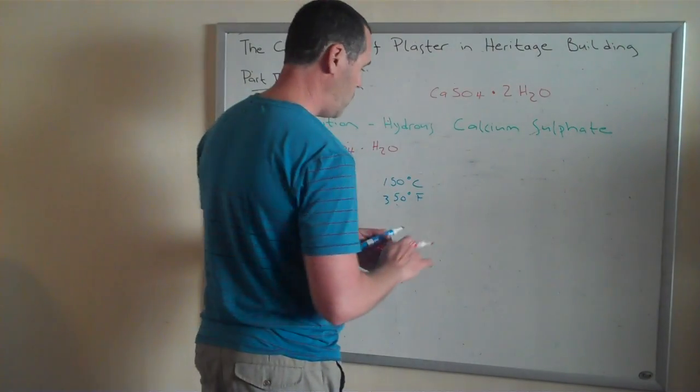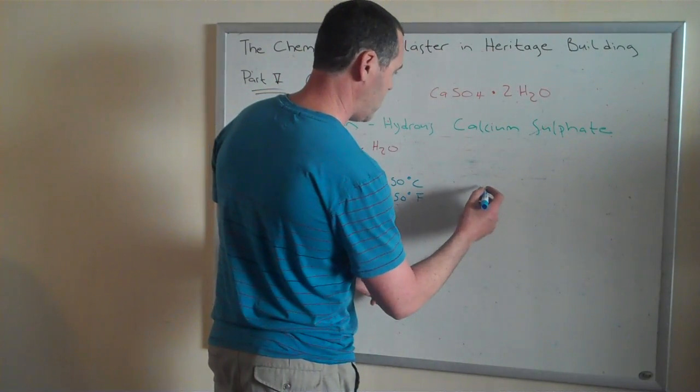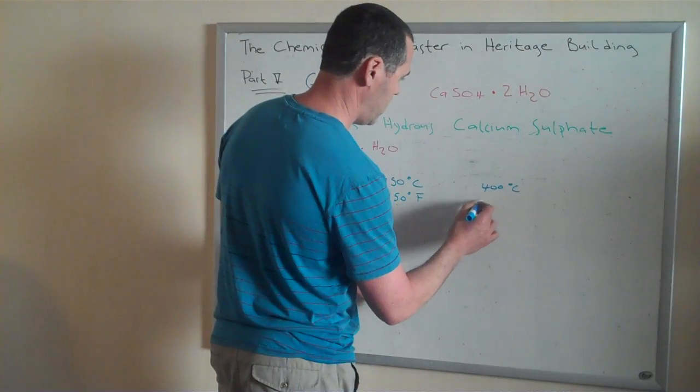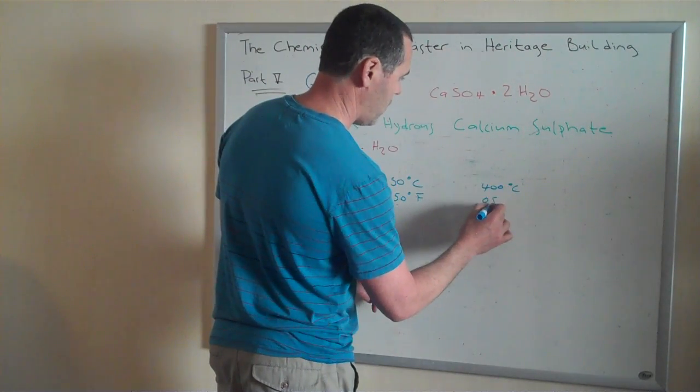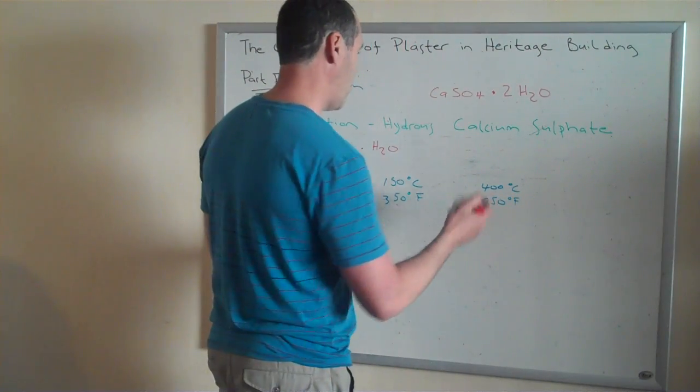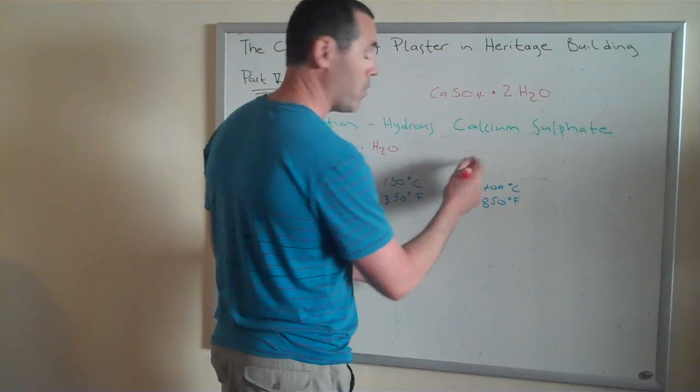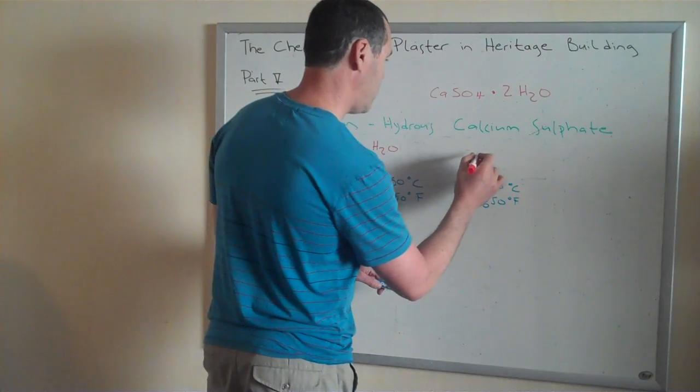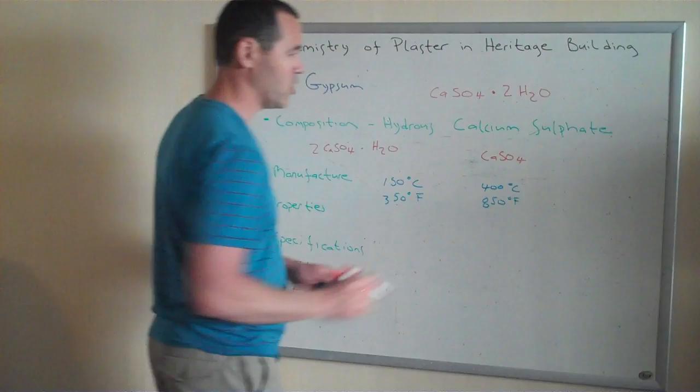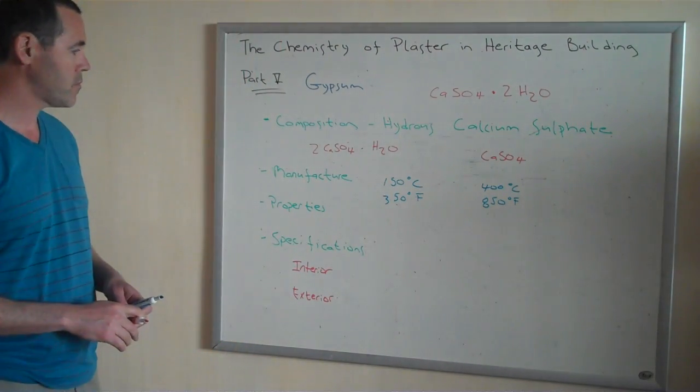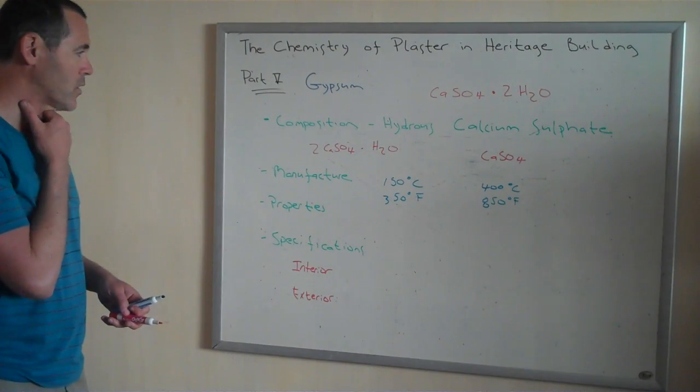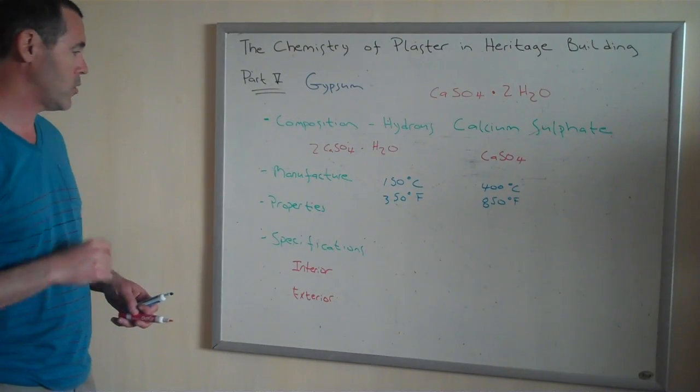If you continue to bake that gypsum at a higher temperature, about 400 degrees Celsius or 850 degrees Fahrenheit, you get what they call anhydrous gypsum. Anhydrous meaning no water. And then it has a chemical formula of just calcium sulfate. These materials are a little bit different. They work differently as plasters, but both are used as plasters.